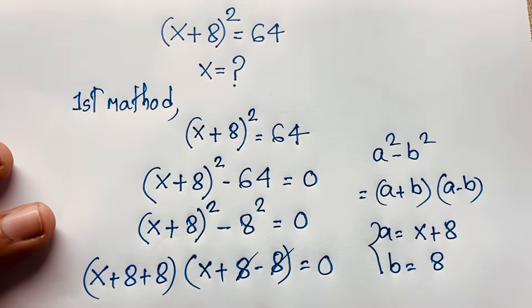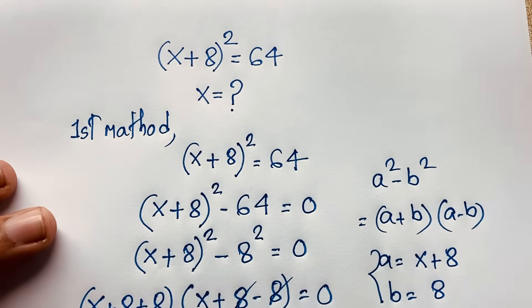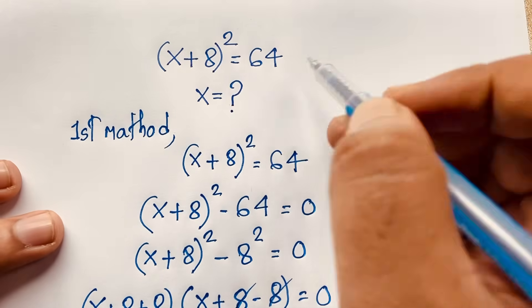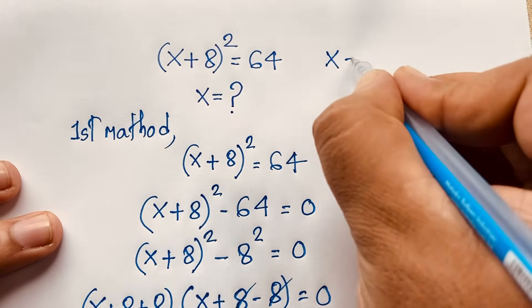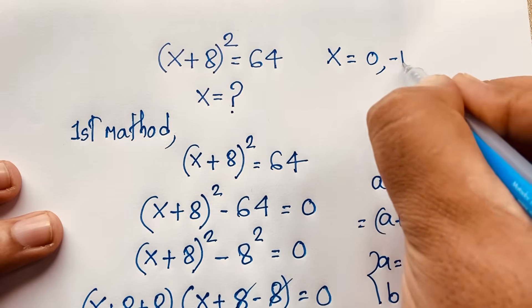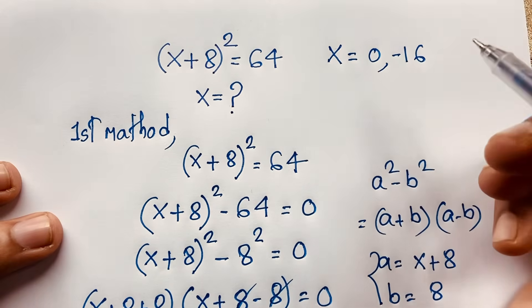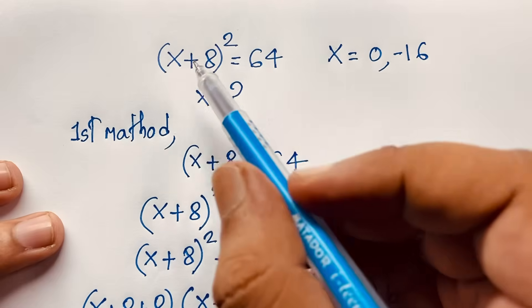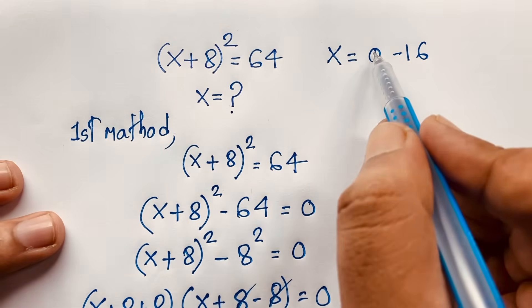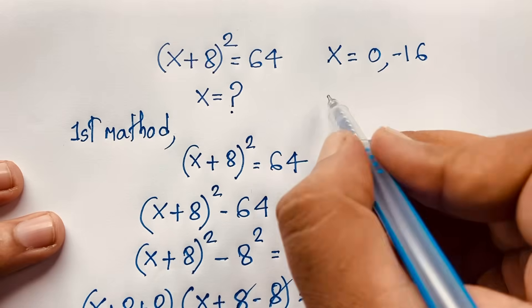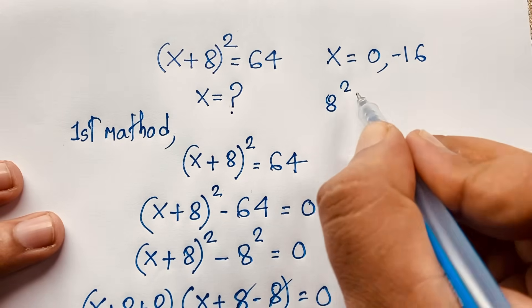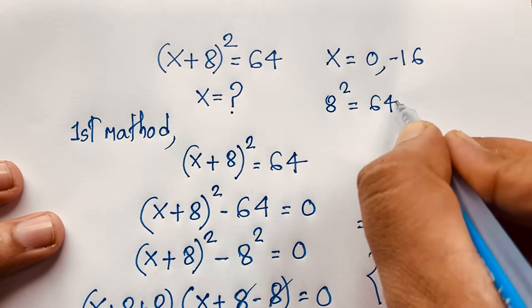Let's verify our question: (x + 8)² = 64. We found x = 0 and x = −16. If x = 0, I substitute below here, so it will be (0 + 8)² = 8² = 64.